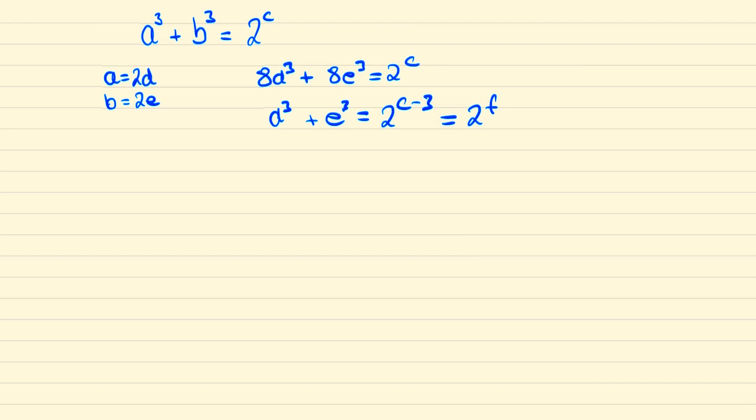...what we're showing here is that if distinct positive integers a and b exist, then we can generate a new solution by dividing them both by 2. And since we can divide by 2 repeatedly, then at some point we must stop where a and b are both odd.